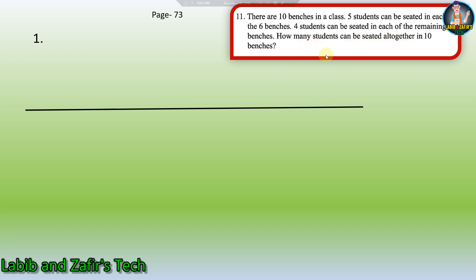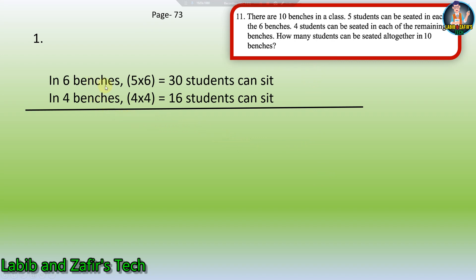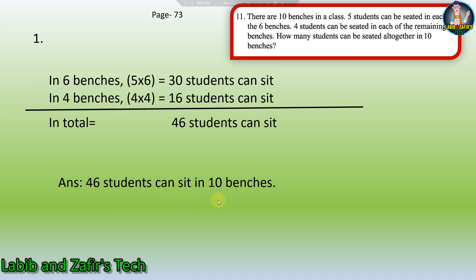We can see there are ten benches: in six benches, five students can sit in each, and in the other four benches, four students can sit in each. Here is the solution: in six benches, five students per bench gives 5 × 6 = 30 students. In four benches, 4 × 4 = 16 students. So in total, 46 students can be seated in ten benches. Answer: 46 students.